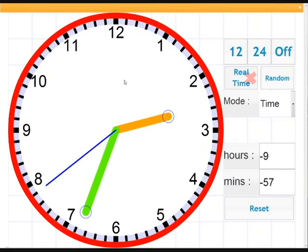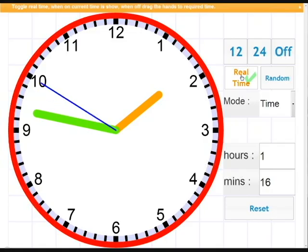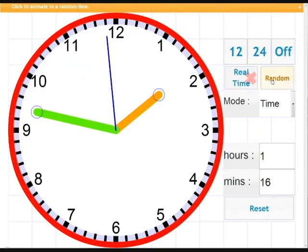So the next thing to look at is real time. So the real time button is a toggle button so it's either on or off. In this case when we turn it on the clock will show the actual time according to the computer's clock. So this is useful for displaying in the classroom.